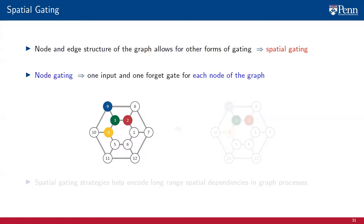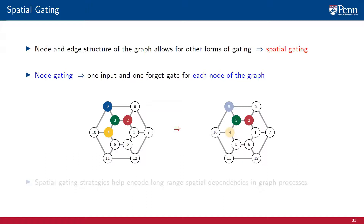There are two strategies for spatial gating. The first one is node gating. In node gating, separate input and forget gates are applied to each node. For instance, consider the graph on the left with a signal defined on nodes 2, 3, 4, and 9. Node gates allow gating each component of the signal independently — the components on nodes 2 and 3 pass, while those on 4 and 9 are attenuated.